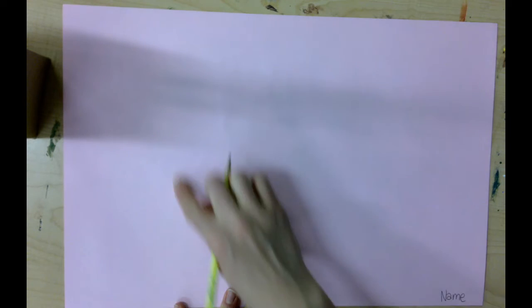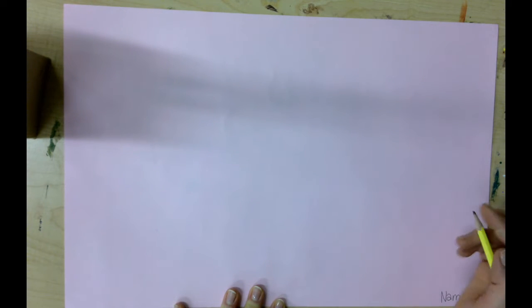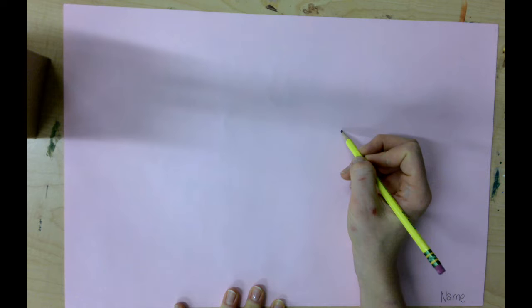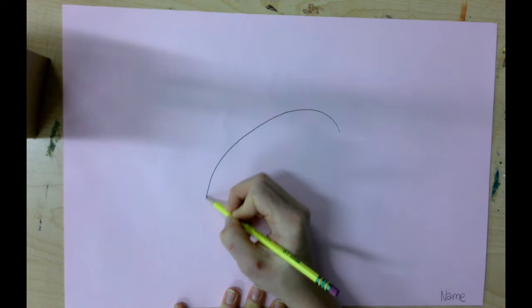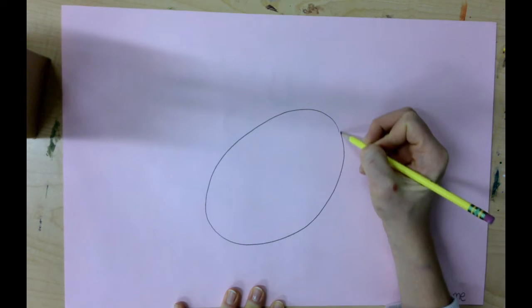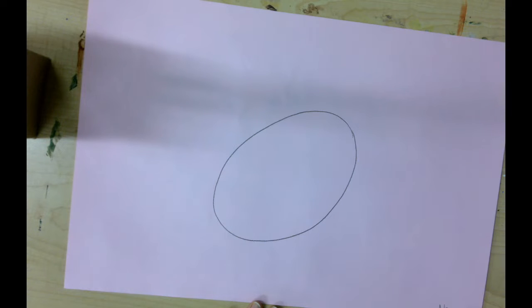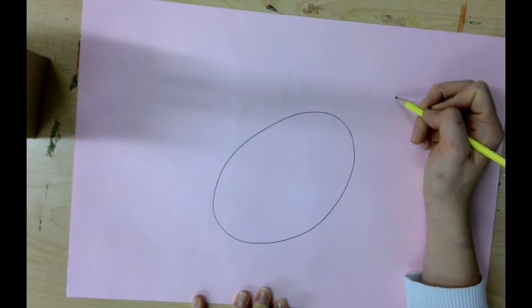Leave some space for all of the details of the dinosaur, but first draw an oval that is kind of tilted like this.